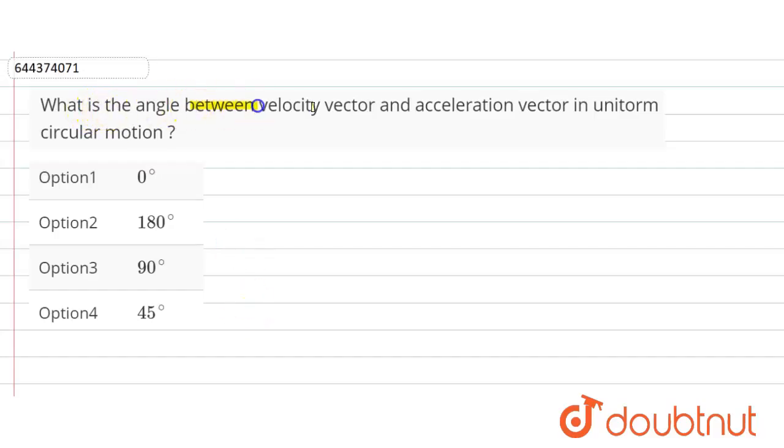What is the angle between velocity vector and acceleration vector in uniform circular motion? Okay, so let's assume here a particle is here in circular motion and this is the radius here, the radius of this circle.